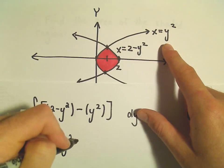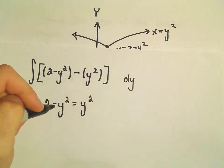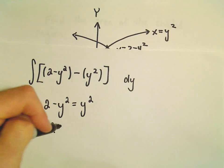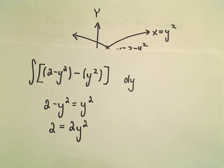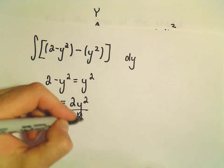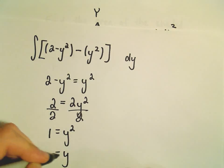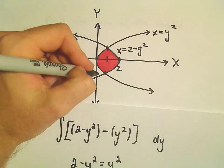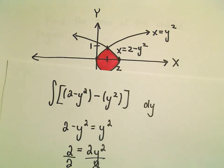So, 2 minus y squared equals y squared. Well, we can add the y squared over. That'll give us y squared plus y squared, or 2y squared. Well, we can divide both sides by 2. That'll give us y squared equals 1. And then, when we take the square root, we'll get positive and negative 1. So, that's nice. So, this is negative 1, positive 1. Make the computations pretty easy.